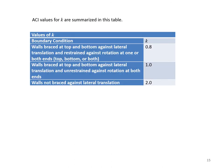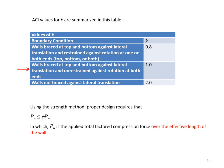This table shows different values of K. In particular, pay attention to walls braced at top and bottom against lateral translation with no restraints against rotation at both ends—that is the usual case. Using the strength method, design requires that PU (the factored applied load) be less than or equal to φPn. The resistance reduction factor in most applications is 0.65.